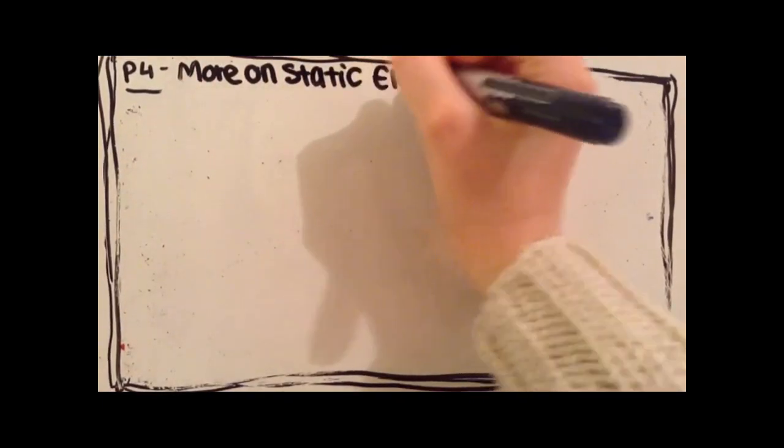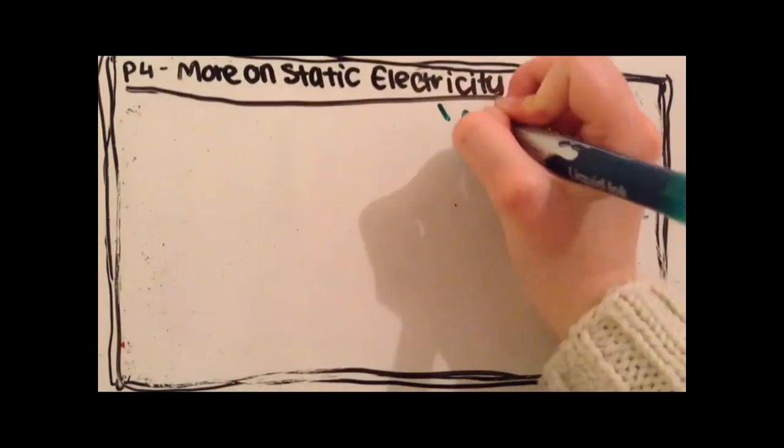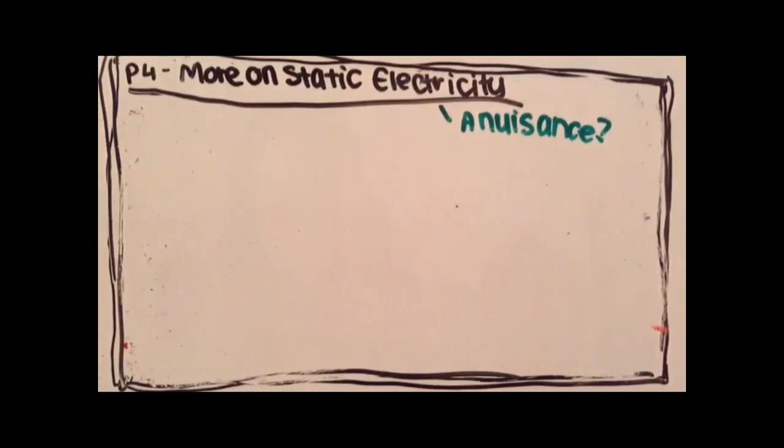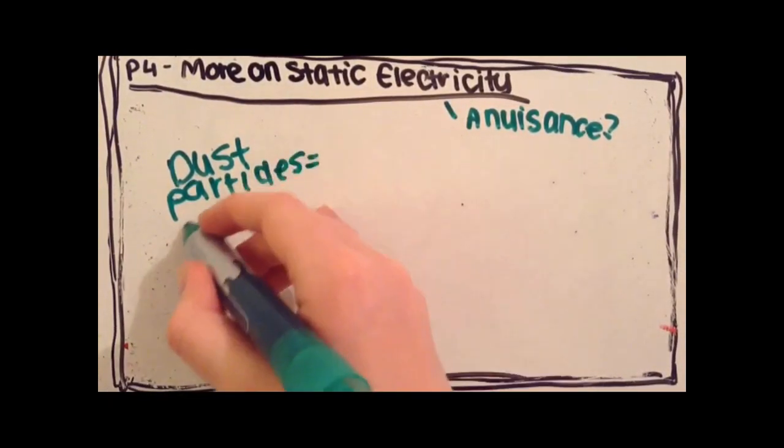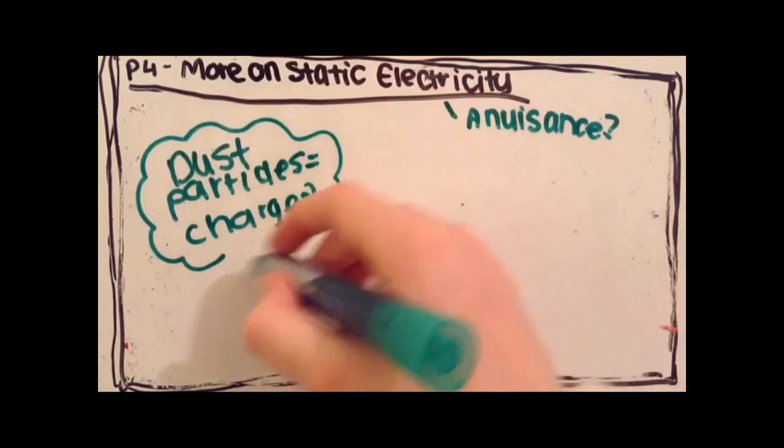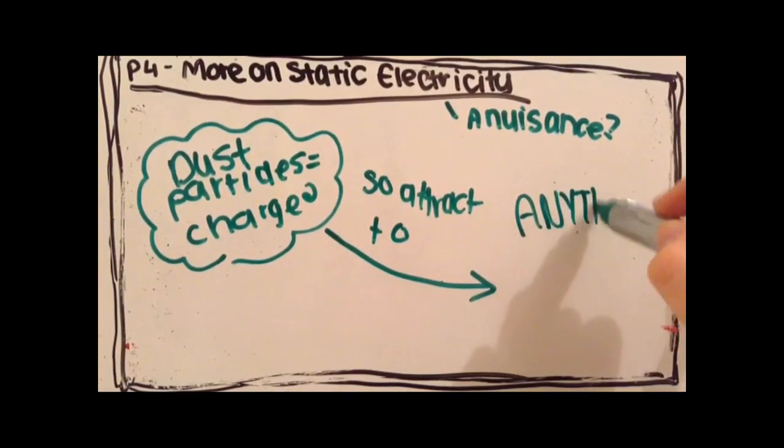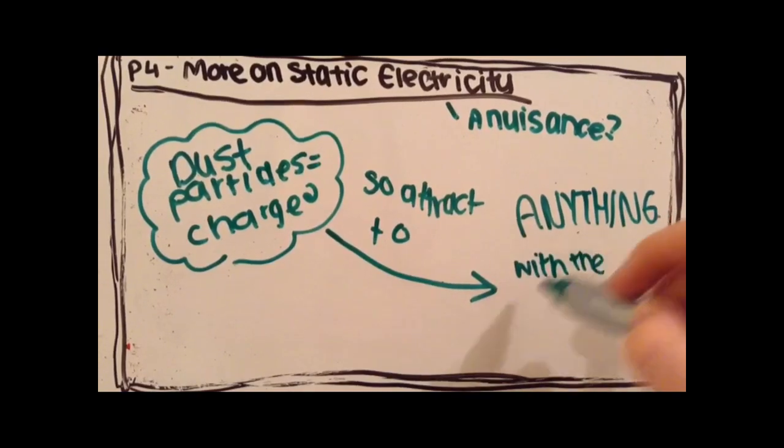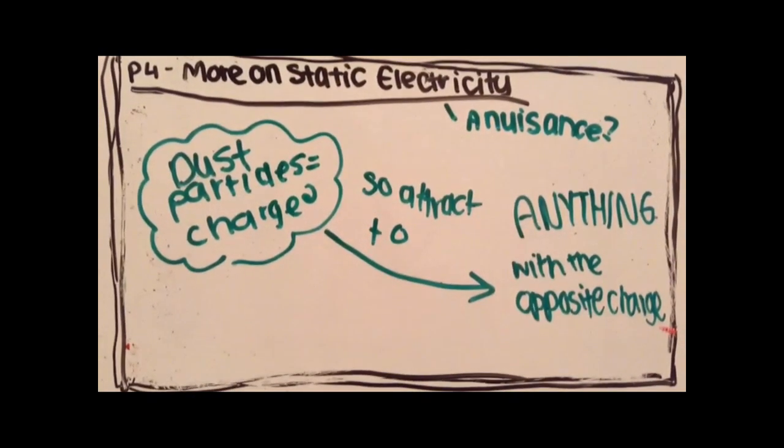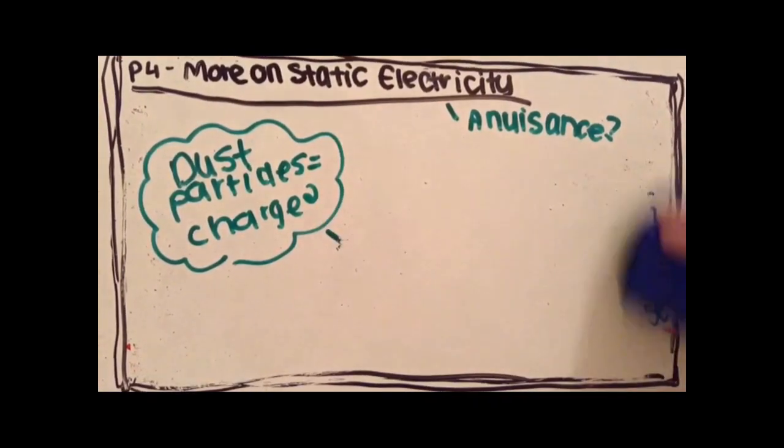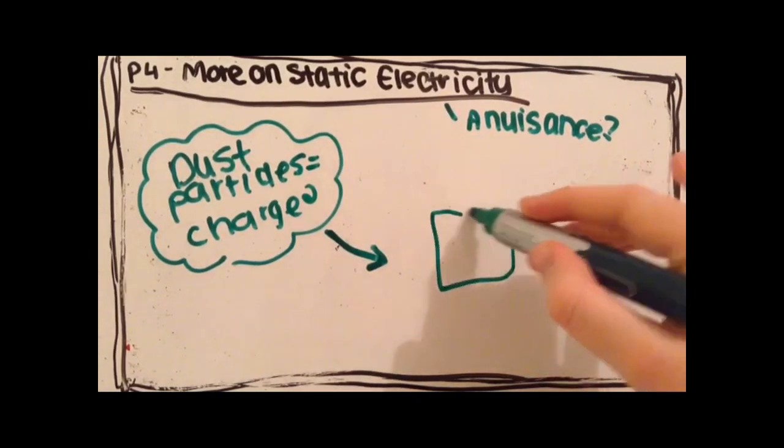Now onto more on static electricity. First, about how static electricity can be a nuisance. For example, attracting dust. Dust particles that are charged will attract to anything with an opposite charge. As these dust particles that are charged will attract anything with an opposite charge, this can be a problem.